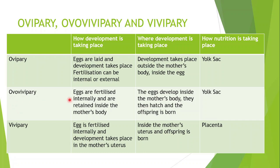For ovoviviparous: eggs are fertilized internally and are retained inside the mother's body. The eggs develop inside the mother's body, they then hatch, and the offspring are born. So the eggs are fertilized inside the mother's body, kept there, develop there, hatch inside the mother's body, and then they are born. Nutrition also takes place through a yolk sac.